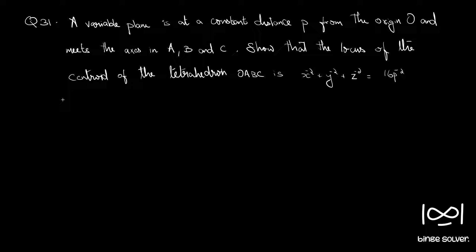So this is a very similar question to the one we did just before, question 30. So here we have a variable plane which is at a constant distance p from the origin and meets the axis in a, b, c.